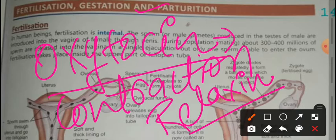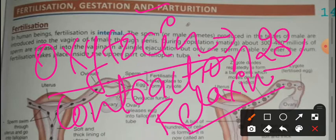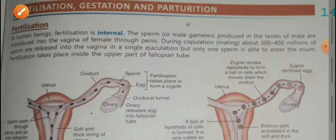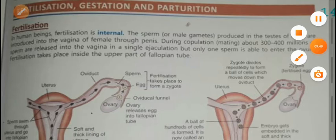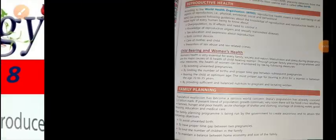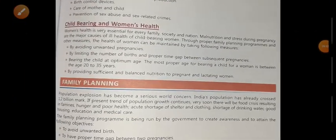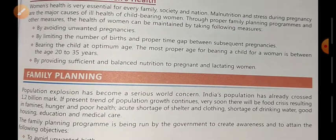A minimum rest of 28 days is provided to a female after delivery. This completes the topic about the gestation period and how fertilization takes place. Next is reproductive health.